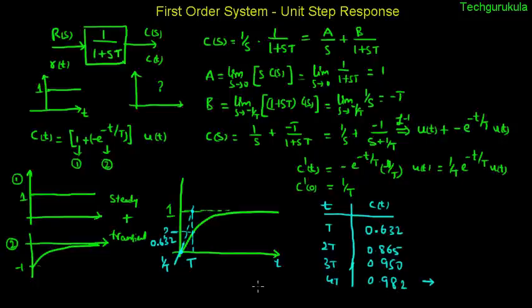If the capital T is larger, the output function would look something like this. It will slowly go and reach the final value after a very long time. We can say when T is large, the output will be sluggish, which is like being lazy. It reaches the final value after quite a bit of time.